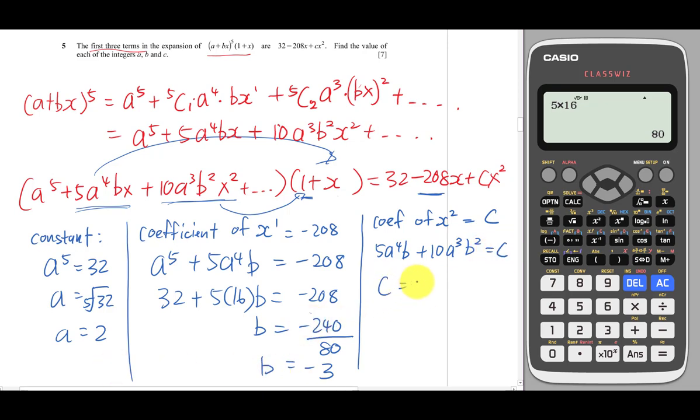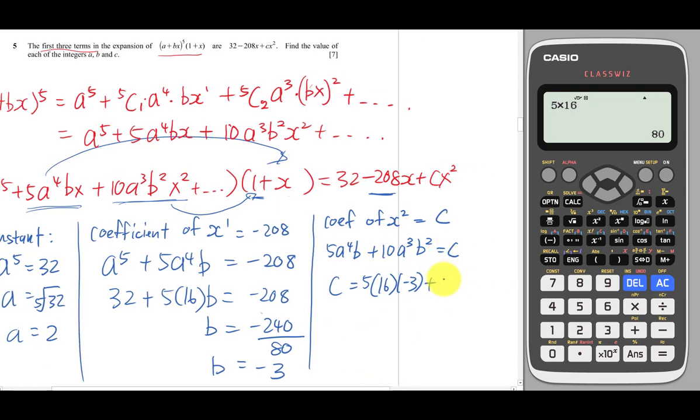My a is 2, so this is 5·16·(-3) plus 10·8·9. Let me use the calculator: 5 times 16 times -3.